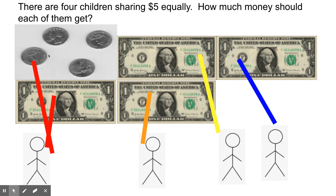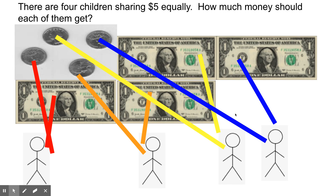The first child gets one of the quarters. This child gets a quarter. This child gets a quarter. And this child gets a quarter. Each child would get a dollar and twenty-five cents.